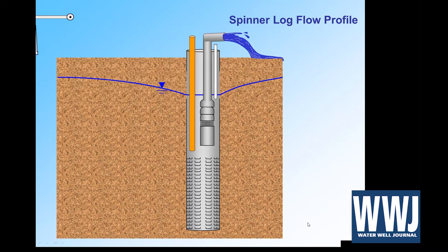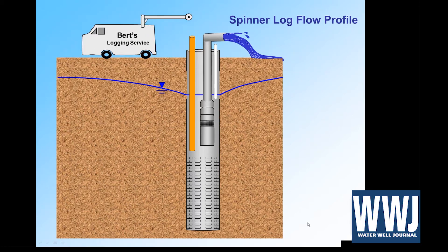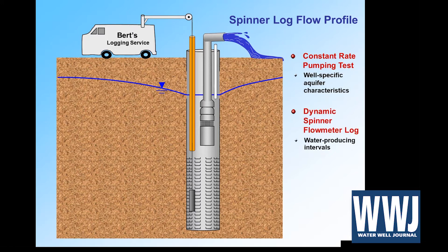The way this works is we turn on the pump and get a little drawdown column. We bring in our logger and he runs what's called a spinner log. A spinner is an impeller just like a flow meter in a pipeline. This is run down at a constant rate of speed while we're running the pump, so water is coming in and flowing up to the pump intake. As this tool flows past, we can measure the different gallons per minute coming in at different depths. In one day's time you can gather a whole lot of information from a well.